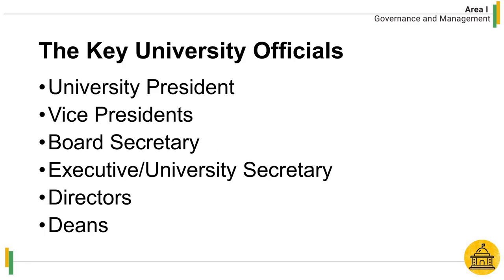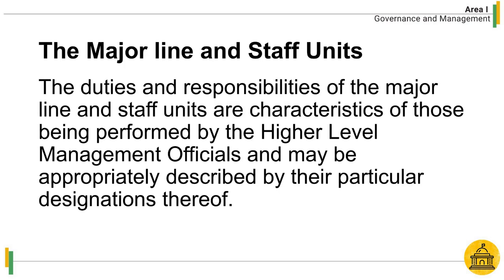The key university officials are the university president, vice president, board secretary, executive or university secretary, directors, and deans. The duties and responsibilities of the major line and staff units are characteristics of those being performed by the higher-level management officials and may be appropriately described by their particular designations.